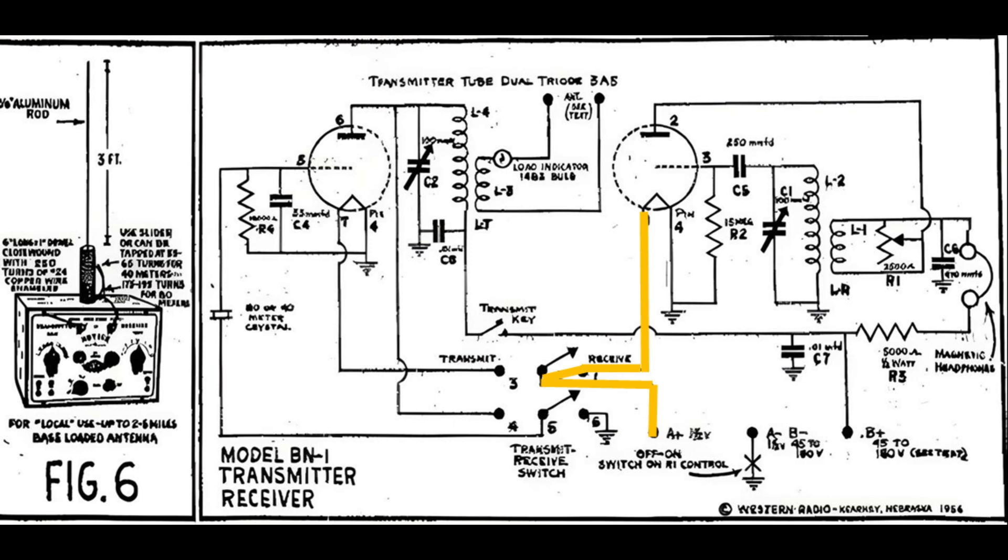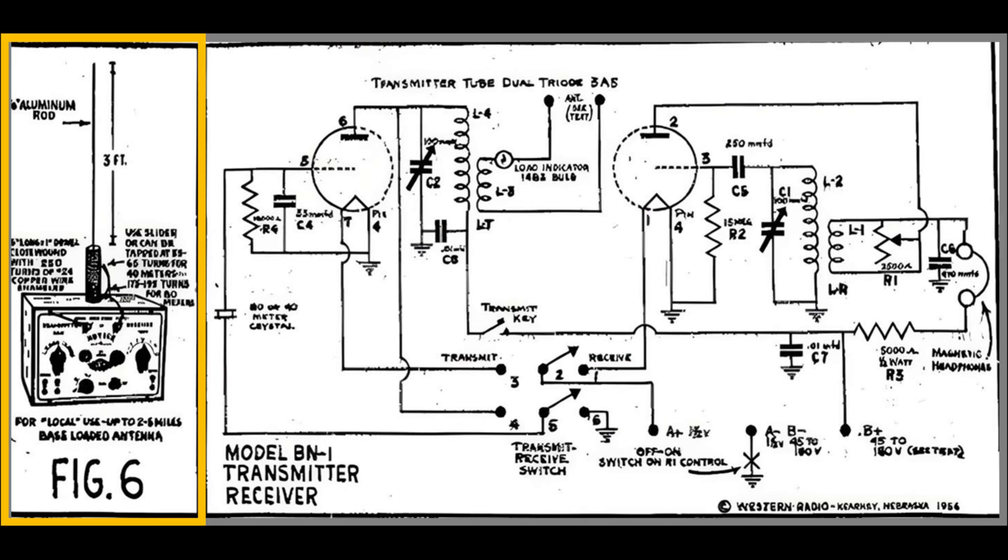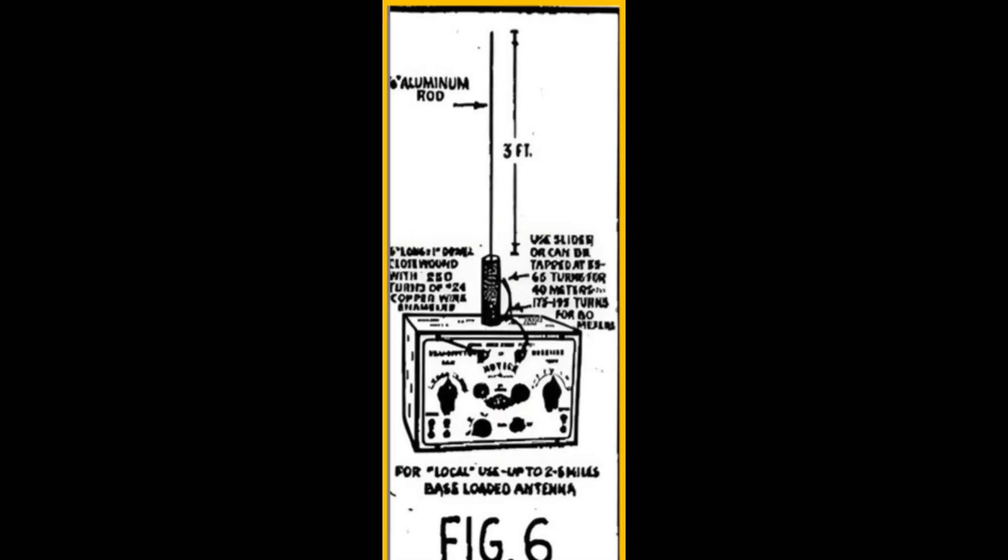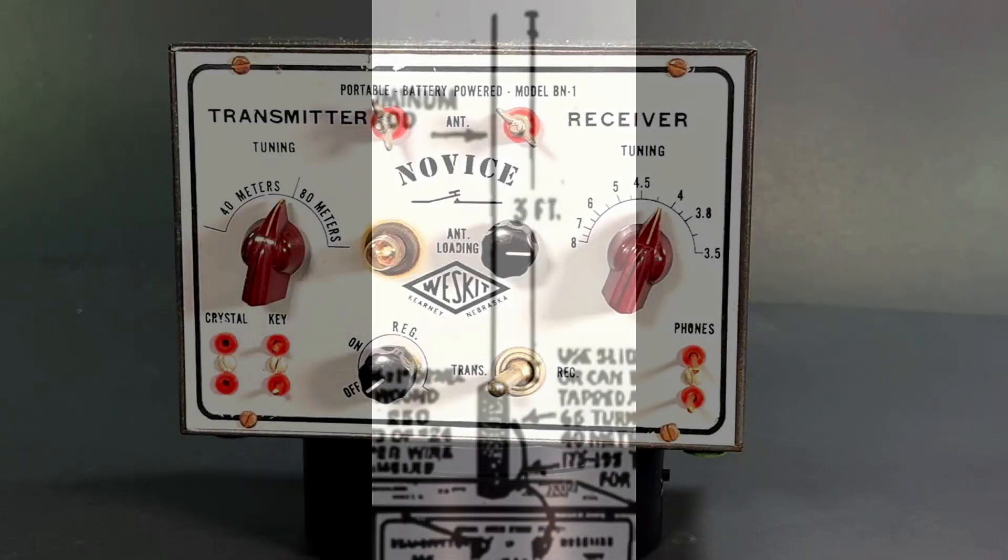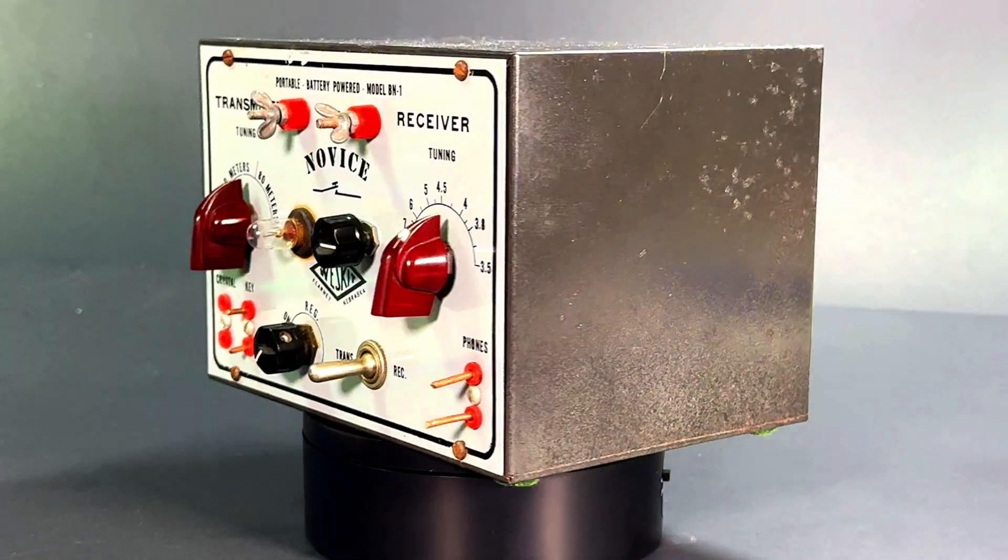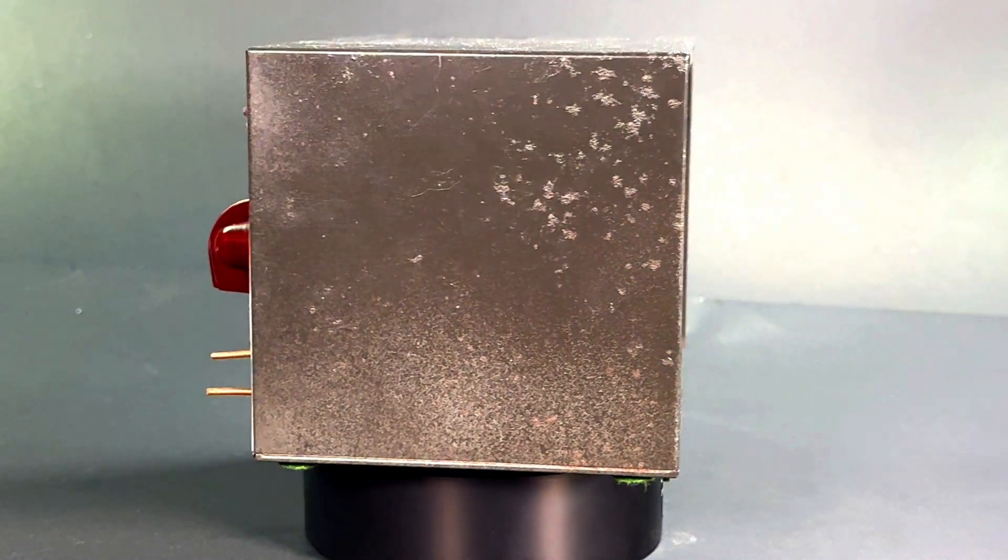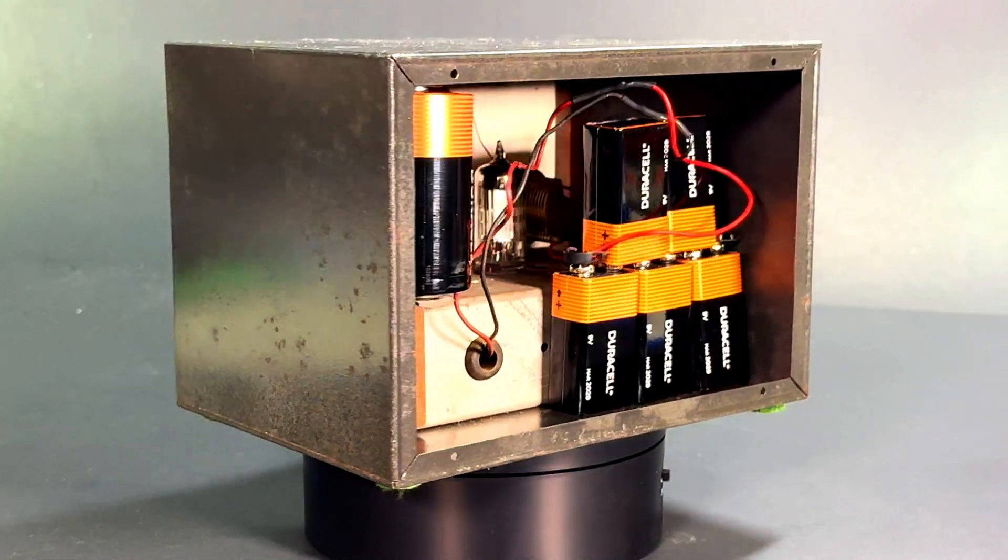So I can see lots of reasons that that would cause some instability. They also have on the schematic the wishful thinking of a three-foot whip antenna base loaded mounted on the top of the radio, which I doubt would work very well.